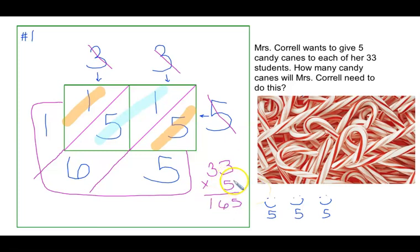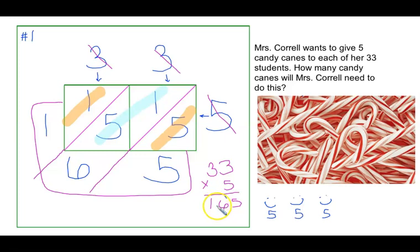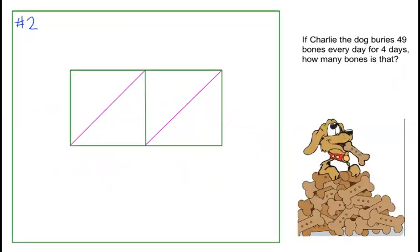If you remember the standard algorithm way: 3 times 5 is 15, and then 3 times 5 is 15 plus that little one gives us 16. Same answer. On to the next problem.